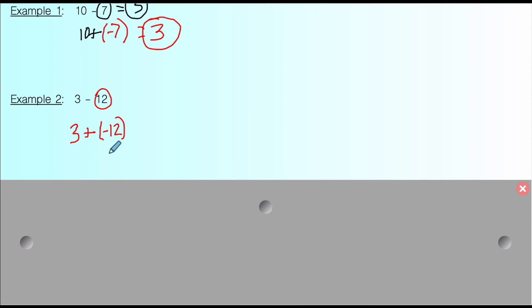So now I've changed my subtraction problem into an addition problem, and now all I need to do is use my addition rules. My addition rules from yesterday say that if the numbers are different, like I have a positive and a negative, just find the difference between the two. The difference between 12 and 3 is 9. And since the 12 is bigger and the 12 is negative, my final answer is going to be negative. So that means that 3 - 12 is -9.